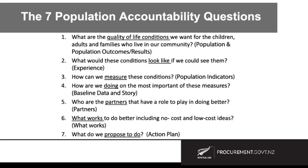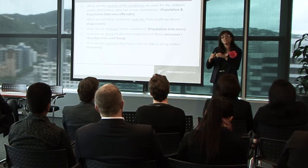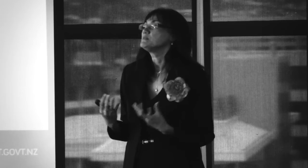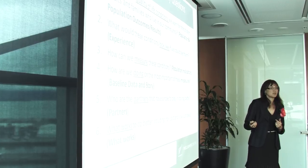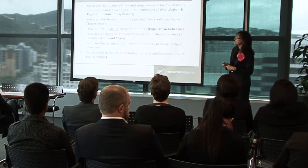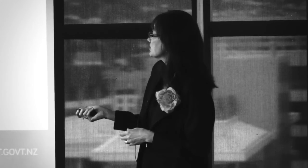Number five is: who are the partners that have a role to play in doing better? In RBA we always ask who the partners are. Population outcomes and accountability is about multiple stakeholders sharing accountability for achieving results or outcomes for a whole population. So identifying who our partners are to turn these curves is critical. Number six is: what works to do better, including no-cost, low-cost ideas? What works means the evidence-based interventions that might help us turn the curve, as well as what we know as professionals, experts, community members and partners. We also ask what are the no-cost, low-cost ideas that will turn curves at a population results or outcomes level.